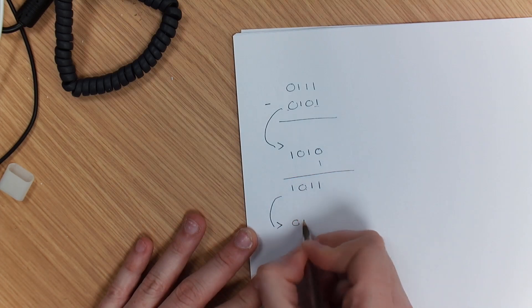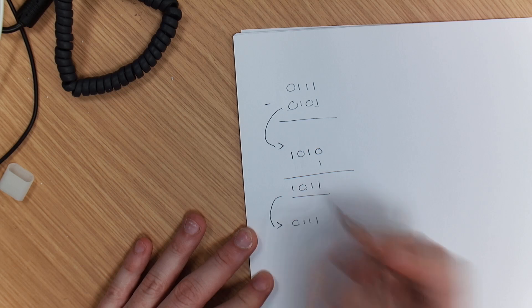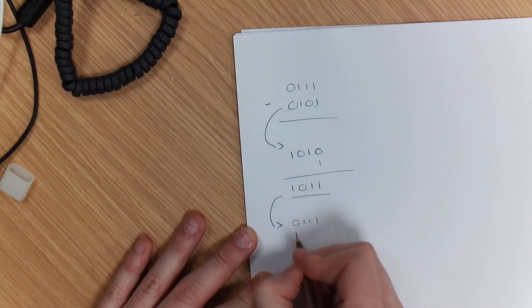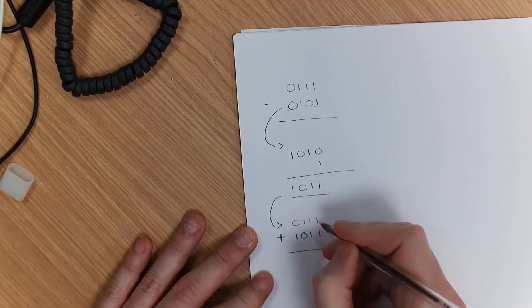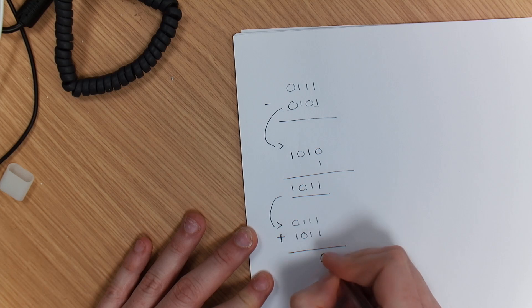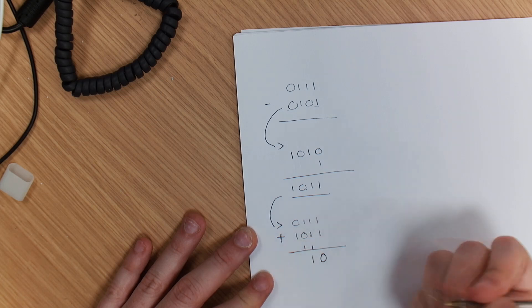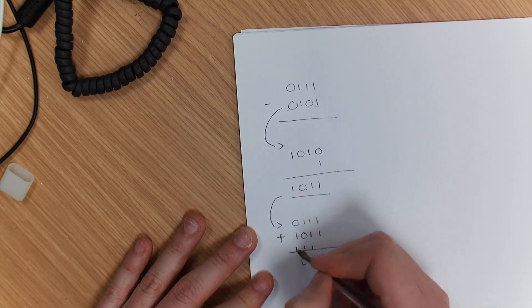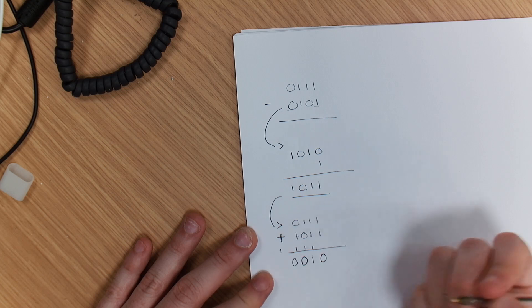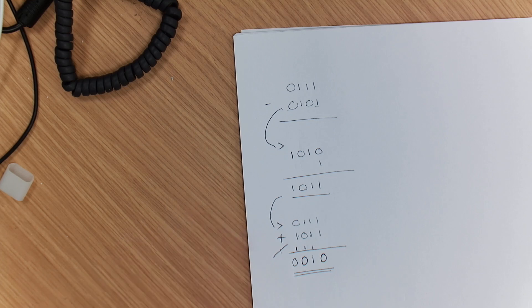Now as step two, I am going to add 0111 and we're going to add it to this number 1011. So we're adding that: 1 plus 1 is 0 carry the 1, 1 plus 1 plus 1 is 1 carry the 1, 1 plus 1 is 0 carry the 1, and 1 plus 1 again is 0 carry the 1. But what we do is we discard that bit.